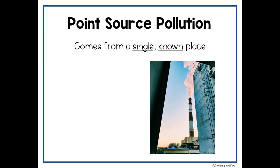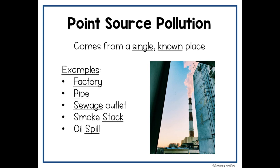Point source pollution is easy to point out — it comes from a single known place. If you look at this picture, we see the smoke and we don't have to guess where it's coming from. We know it's coming from the smokestack, which belongs to that factory. Some examples of point source pollution would be factories, a pipe with something coming out of it, a sewage outlet, a smokestack, or an oil spill. In all of these cases, you can point out the source of that pollution.